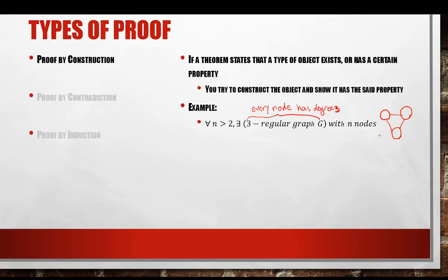So what this statement says is that if you have a graph with n nodes where n is greater than 2, you could create a three-regular graph. For example, with 4 nodes, every single node in the graph will have degree 3. One node has edges here, here, and here — degree equal to 3. The next node: one edge there, one edge there, one edge there — degree equal to 3. The middle node similarly has degree 3.